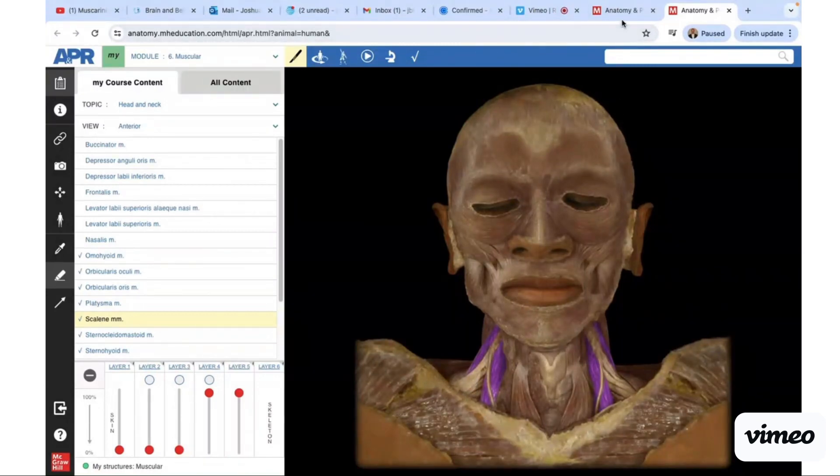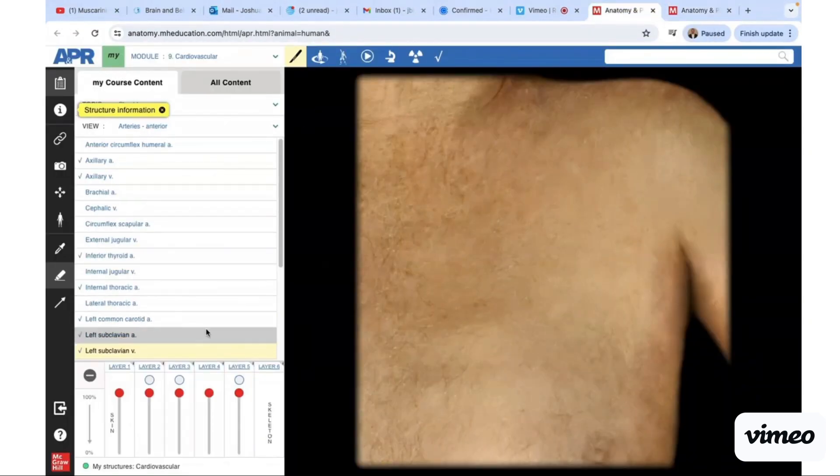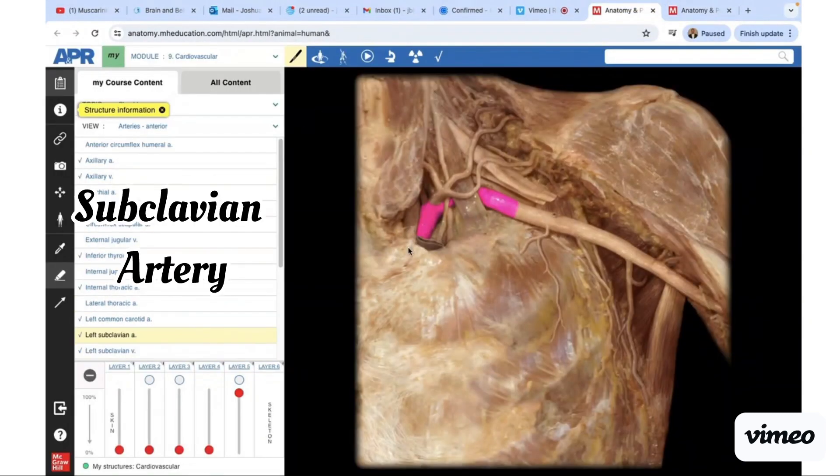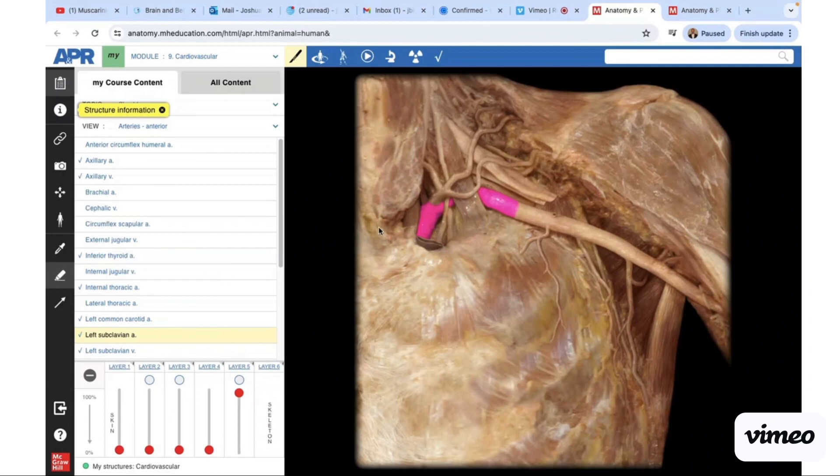Let's look at some of the vascular supply to this region. Let's start with the subclavian artery. The arch of the aorta has three major branches. The first one is the brachiocephalic—it's going to provide blood supply to the right half of the brain and face and right arm. Then you have the second branch, which is the left common carotid artery, feeding blood supply to the left side of the face and brain.